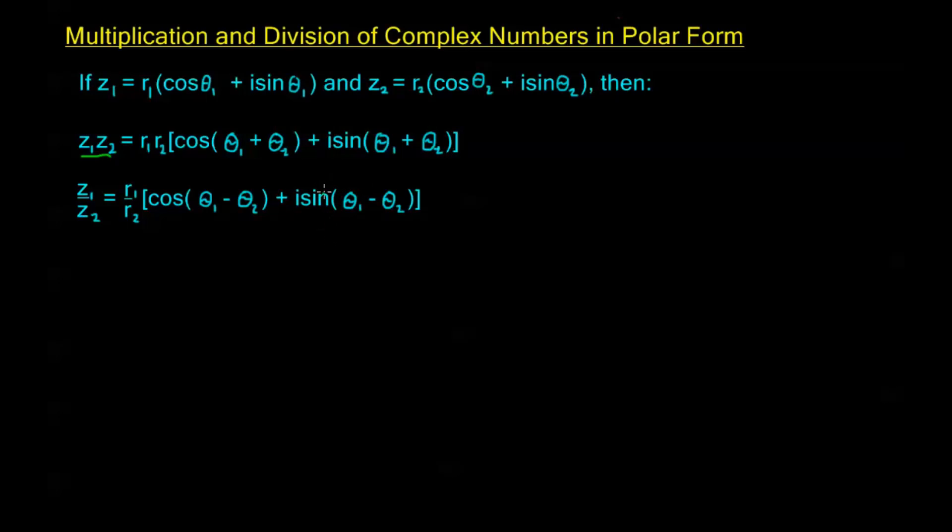When we multiply two numbers in polar form, we multiply the moduli and add the arguments. So multiplying Z₁ and Z₂, I'm going to multiply the moduli to get my new modulus of the product, and add the arguments to get my new argument of the product.